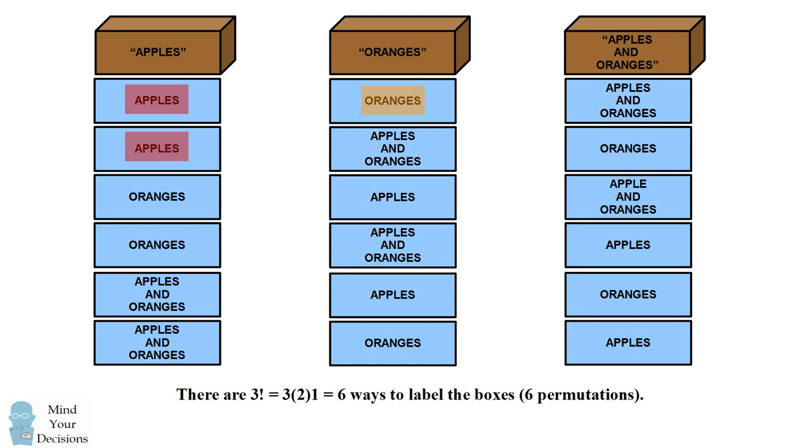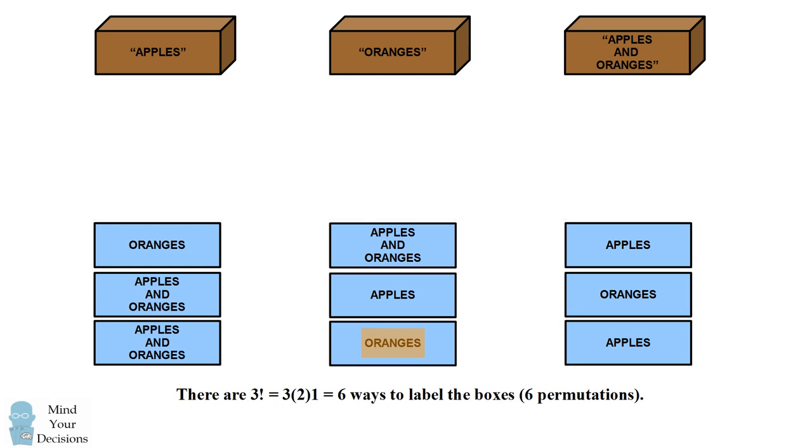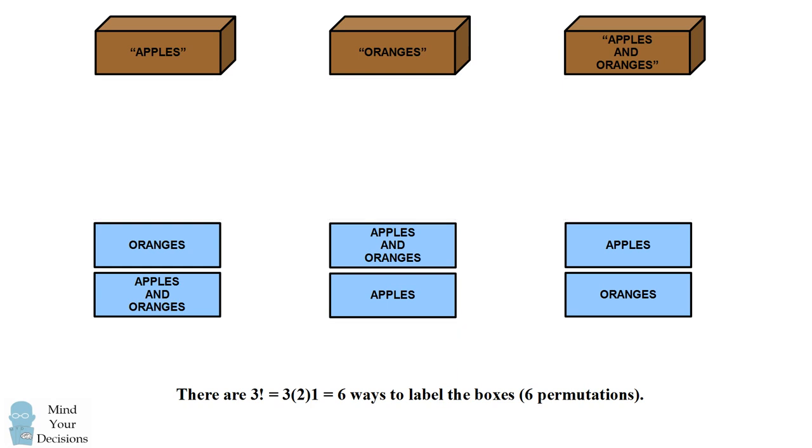Similarly, we go through the other rows in which the other labels would match what's written on the box. So we can eliminate any row in which one of the labels matches the label that's written on the box. So we can eliminate the first and second rows, we can then eliminate the third row, and we can eliminate the final row. This leaves two ways in which all of the labels are wrong.